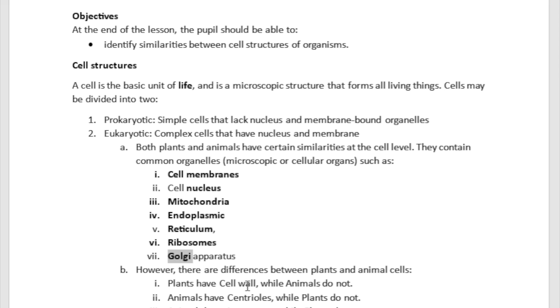But then there are differences between plant and animal cells. So plant cells have cell walls. Okay. So you're going to see that cell wall over there. But animals do not. Animals have centrioles. You're going to see centrioles. But plants do not have. Animals have lysosomes. And plants do not have lysosomes.